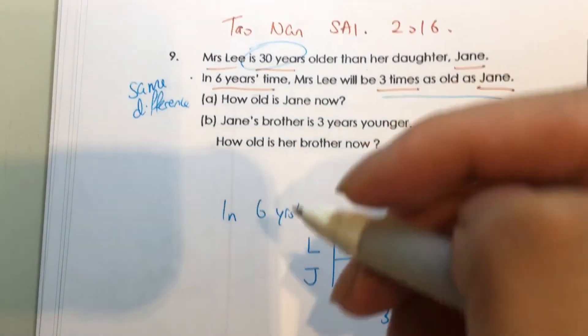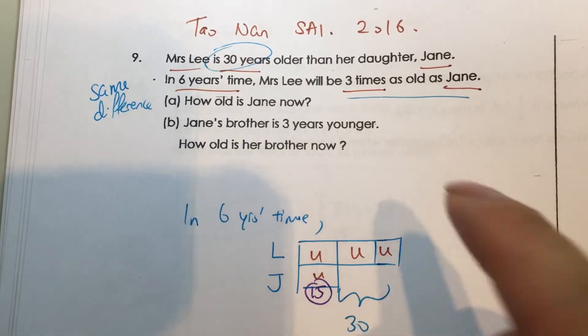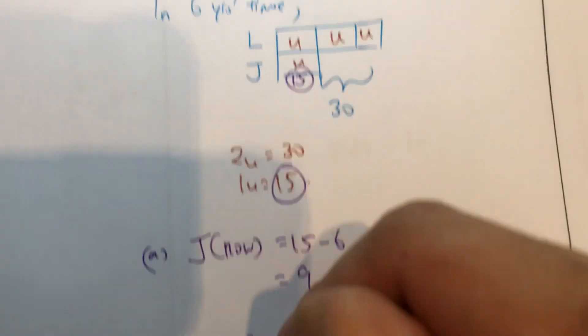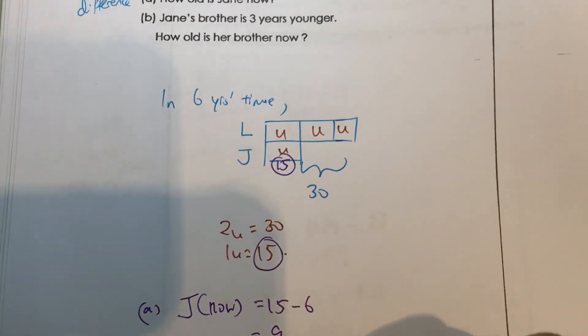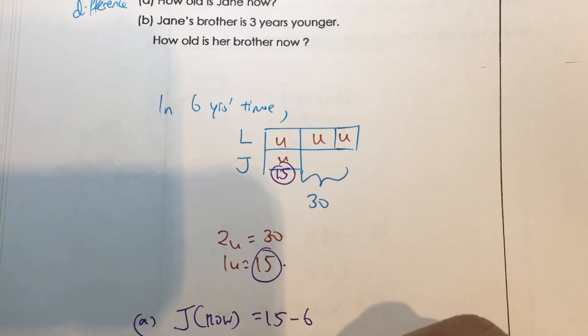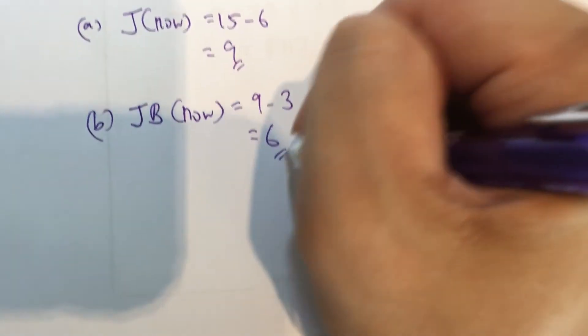And for B, Jane's brother is 3 years younger. So Jane's brother now - 3 years younger, so younger means minus - so 6. Alright, that's it.